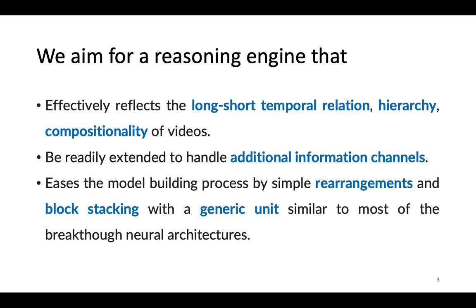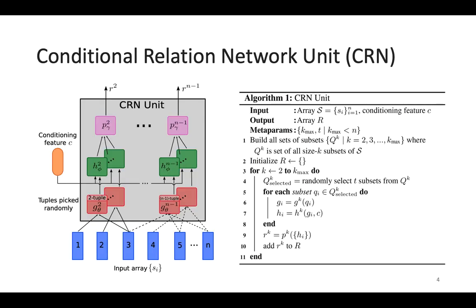And finally, it can help to ease the model building process by simple rearrangements and block stacking with a generic unit that we see in most breakthrough neural architectures such as ResNet or Recurrent Neural Networks. In particular, we propose a general-purpose reusable unit called Conditional Relation Networks, or CIN.